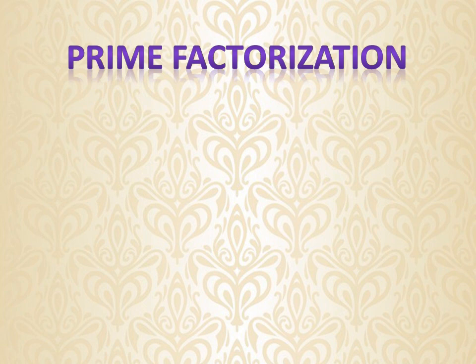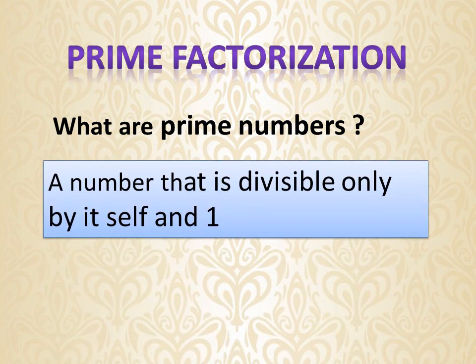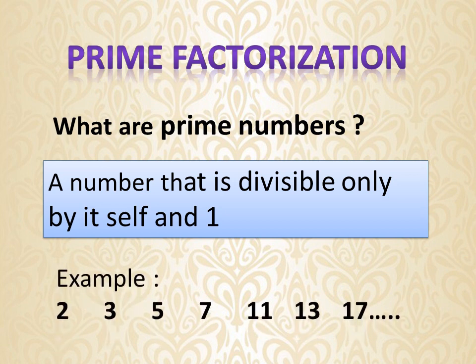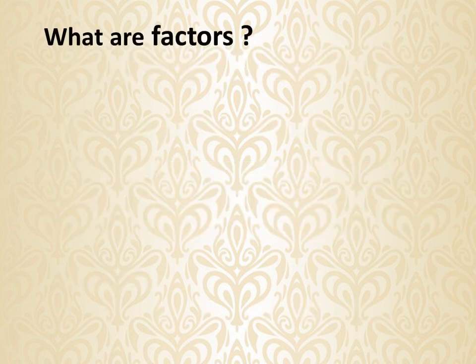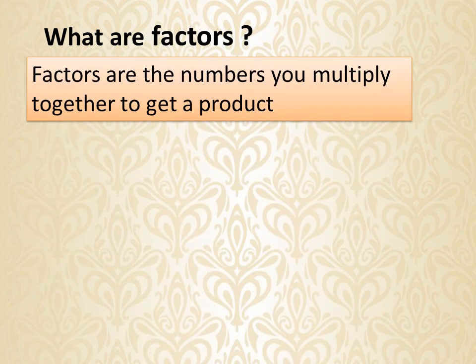What are prime numbers? A number that is divisible only by itself and one. Examples: 2, 3, 5, 7, 11, 13, 17, and so on. Now let us understand the second one — what are factors?